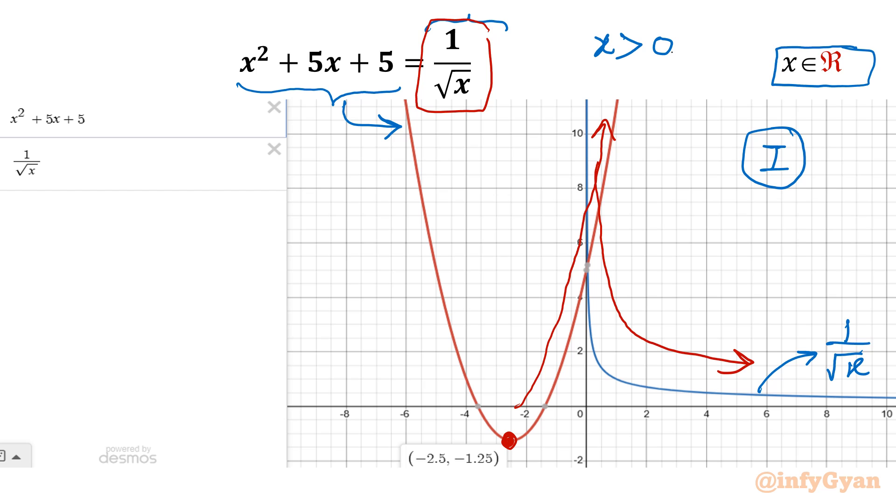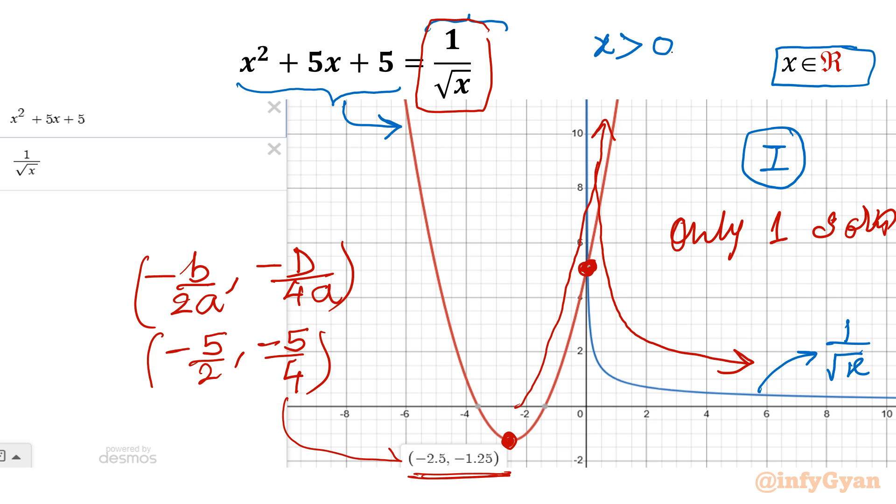So what will happen? They will intersect at single point only. So only one solution is there. And see how we can conclude that this is our vertex. So that formula is very simple: -b/2a, -d/4a. Now you can see b is 5, so this value will be -5/2. And if you want to check the vertex, see this point is negative. D is b² - 4a, so 25 - 20, so -5/4. This is already written over there.